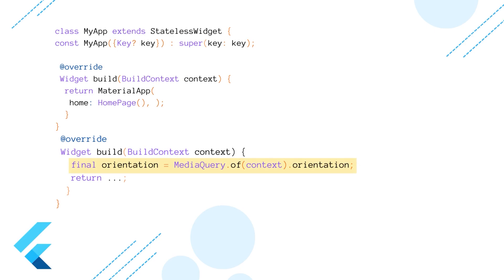And by doing MediaQuery.of(context), we access information about the device screen size, orientation, pixel density, and many others. All the information we access through MediaQuery.of(context) comes from MediaQueryData, which is part of the Flutter framework.